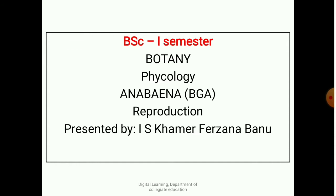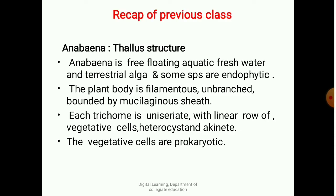Coming to a quick recap of the previous class on Anabaena thallus structure: Anabaena is a free-floating aquatic freshwater and terrestrial alga, and some species are endophytic. The plant body is filamentous, unbranched, bounded by a mucilaginous sheath. Each trichome is uniseriate with a linear row of vegetative cells, consisting of heterocysts and akinetes. The vegetative cells are prokaryotic in nature.